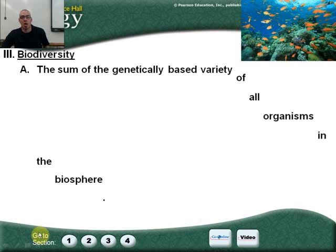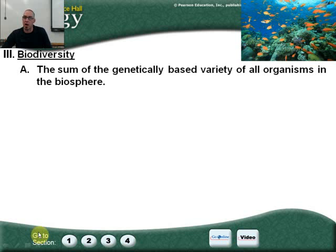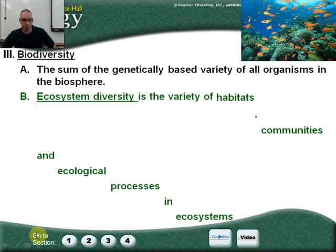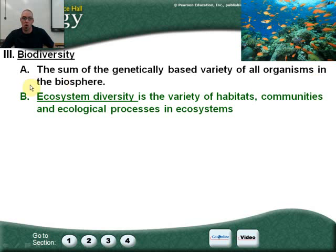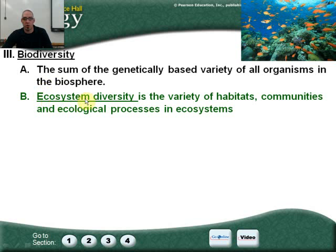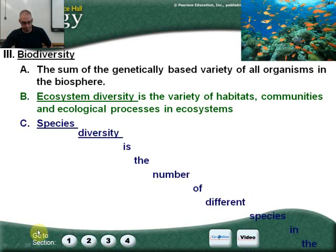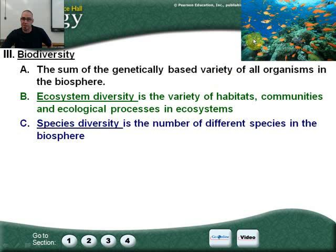By the end of this lecture you should understand that high biodiversity is better than low biodiversity. Biodiversity is the sum of all the genetic-based variety of all organisms in our biosphere — not just coral reefs, but everything from the polar zones through the temperate zones all the way to the tropical zones. Biodiversity is created by how different each ecosystem can be.